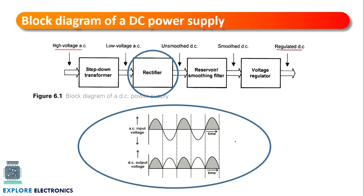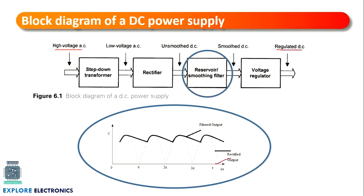Next, the rectifier — a device that converts AC into pulsating DC. In the waveform, the AC voltage coming out of the transformer has its negative half cycles removed; only the positive half cycles appear at the output. However, the output still contains an AC component — that is what we call unsmoothed DC. We give this signal to a reservoir or smoothing filter circuit. The reservoir has a capacitor circuit, and the smoothing filter removes ripples, giving a smoothed DC signal at its output.